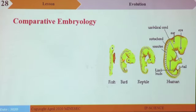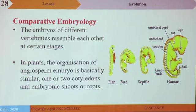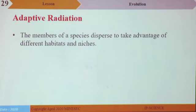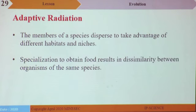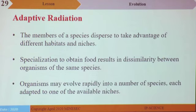Comparative embryology: the embryo of fish, bird, reptile, and human appear the same at one stage of their development, showing descent from a common ancestor. In plants, the organization of angiosperm embryo is basically similar — one or two cotyledons and embryonic shoots or roots — meaning they all come from a common parent. Adaptive radiation: members of a species disperse to take advantage of different habitats and niches. Specialization to obtain food results in dissimilarity, and organisms may evolve rapidly into a number of species each adapted to one of the available niches.